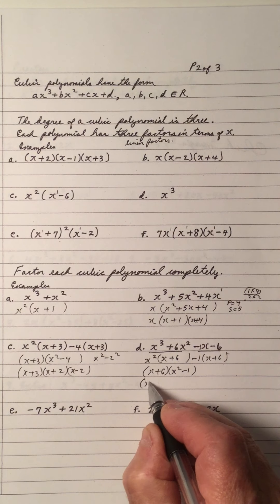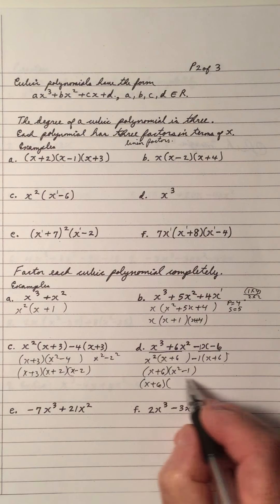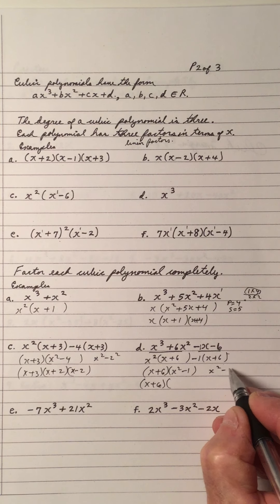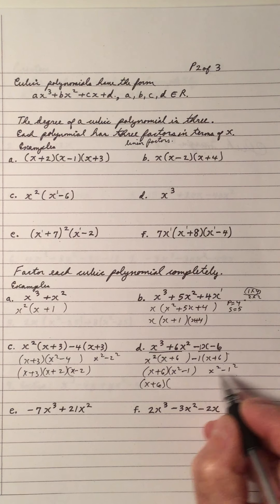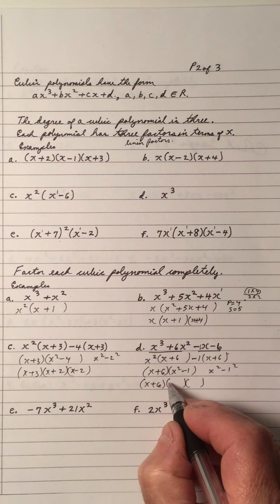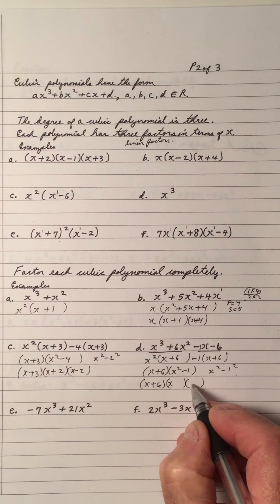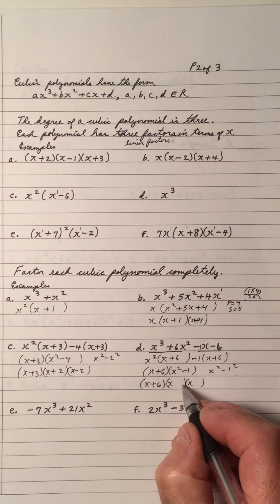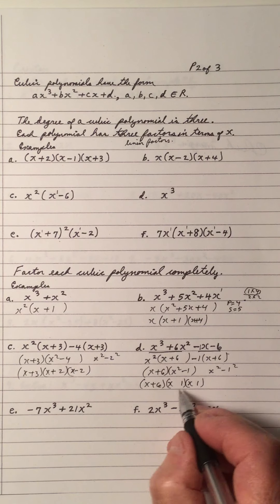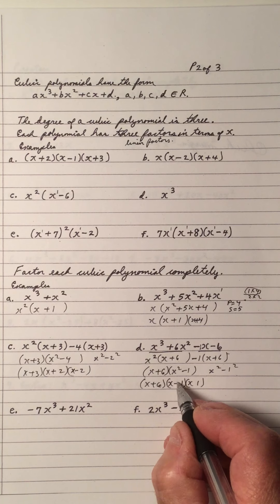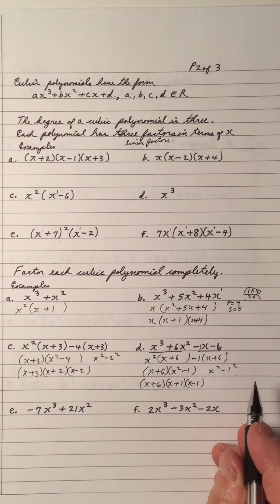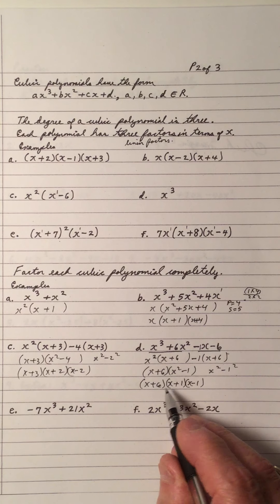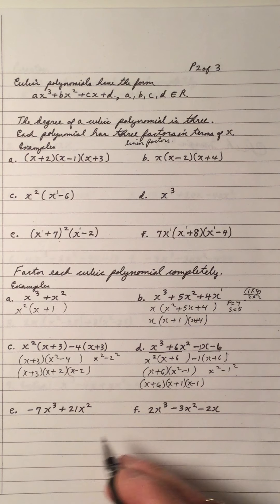We take x plus 6 out of the first expression and get x squared. Take x plus 6 out of the second expression and get minus 1. Again, we have the difference of two squares — x squared minus 1 squared. The difference of two squares gives the same terms: x and x, 1 and 1, with a plus and a minus.